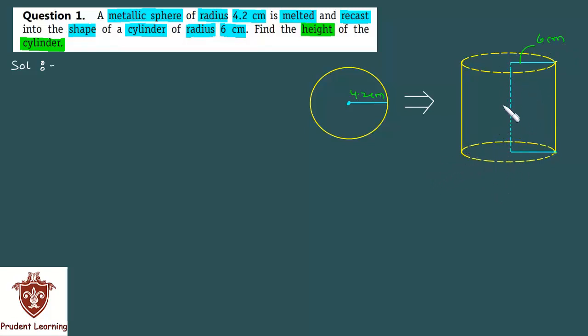Before solving this question, let us assume the height of the cylinder as h. Since the metallic sphere is melted and recast into a cylinder, there wouldn't be any loss in the metal, which means the volume of the metallic sphere must equal the volume of the cylinder. With the help of volume balance, we can easily calculate the height of the cylinder.